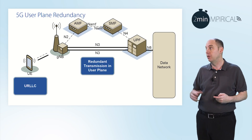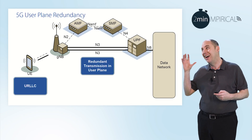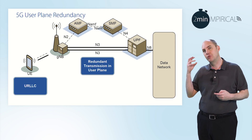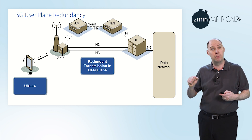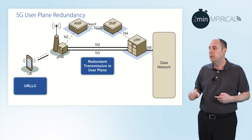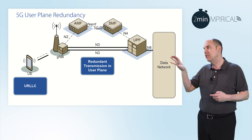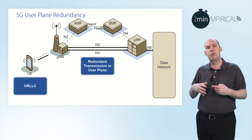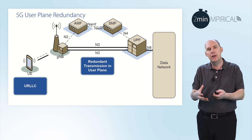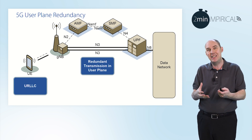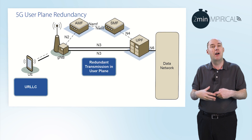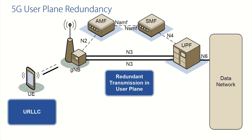The ultra-reliable aspect is all about making sure the data gets through, and having redundant transmission links ticks that box. But this is only one element, because this is the N3. What about the radio connection — isn't that the weak link? And the answer is yes it is. We could put effectively some redundancy there as well.